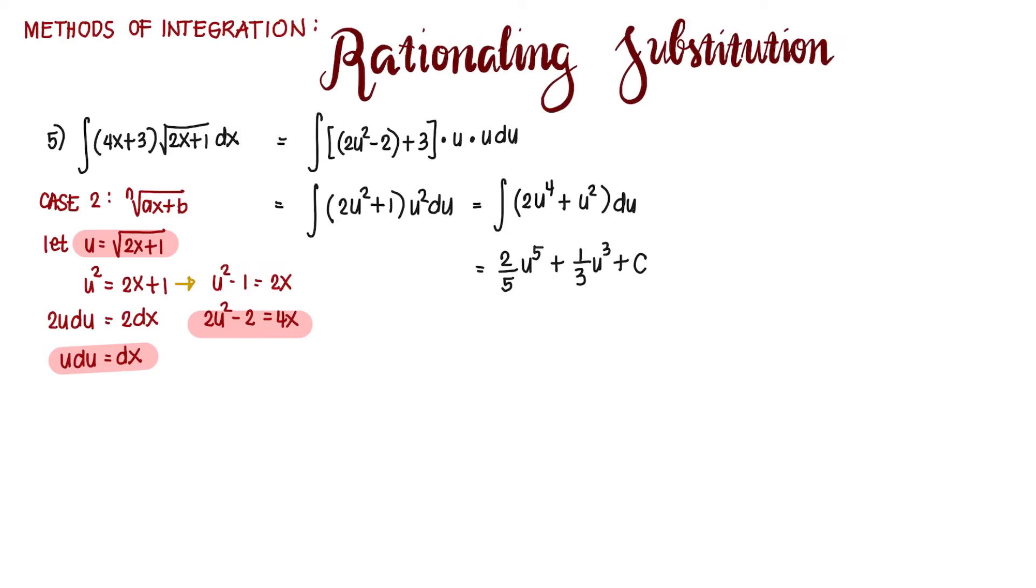But u is square root of 2x + 1, or (2x + 1) raised to the power of 1/2. So we have (2/5)(2x + 1)^(5/2) + (1/3)(2x + 1)^(3/2) + C.